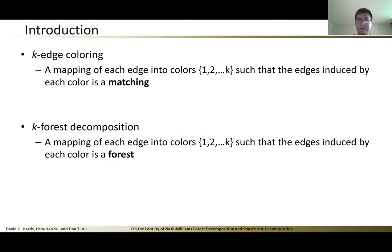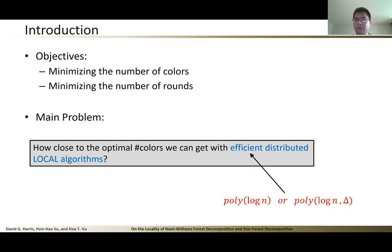It's insightful to compare the forest decomposition with the traditional edge coloring problem, where in the traditional edge coloring problem, we want each partition to be a matching. In the forest decomposition problem, we want each partition to be a forest. These are the two common goals: to minimize the number of colors and to minimize the number of rounds to obtain such a structure.